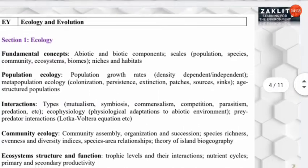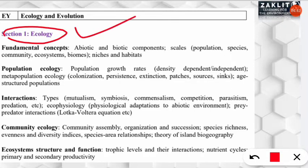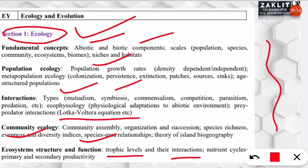Now let's move on to the syllabus of ecology and evolution — that's very important. Students preparing for UGC NET environmental science will find this paper easier compared to other candidates, as the ecology and evolution paper in GATE is more closely aligned with the UGC NET environmental science syllabus. Section one covers ecology, including trophic levels and their interactions.